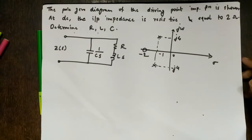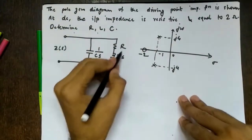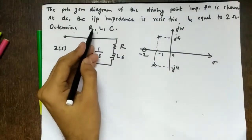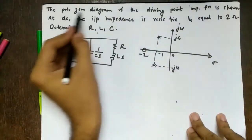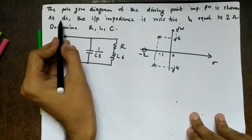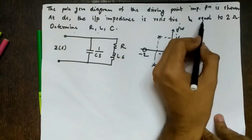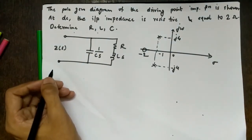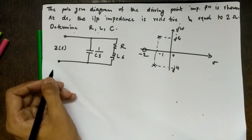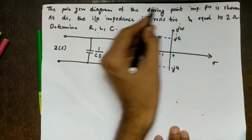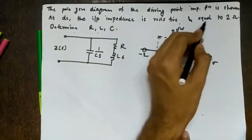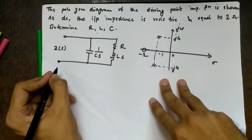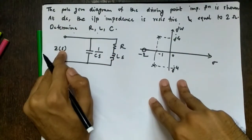The next problem is a different type: the pole-zero diagram is given and the network topology is given, but the component values are unknown. We must find R, L, and C. The pole-zero diagram of the driving-point impedance Z(s) is shown, and at DC the input impedance is resistive and equal to 2 Ω.